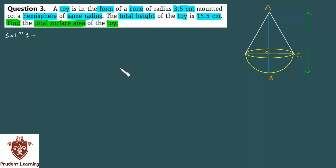In this question, you have a toy which is the shape of a cone mounted on a hemisphere. The hemisphere and the cone have the same radius.